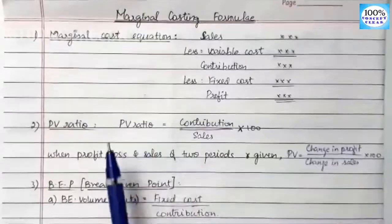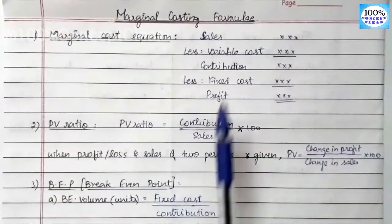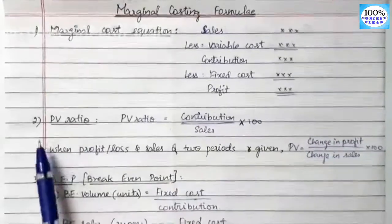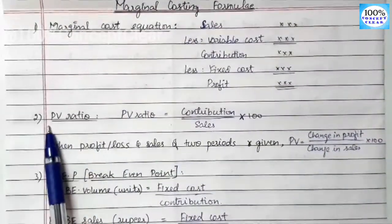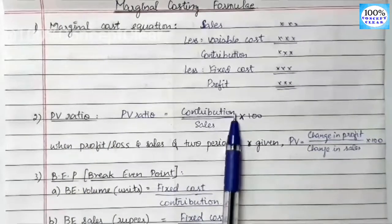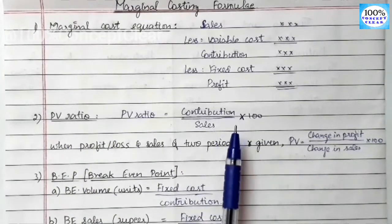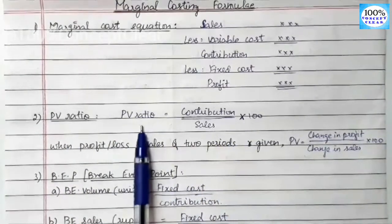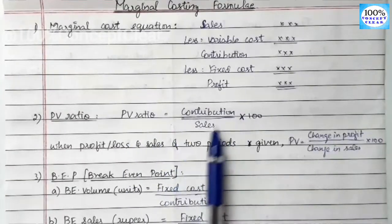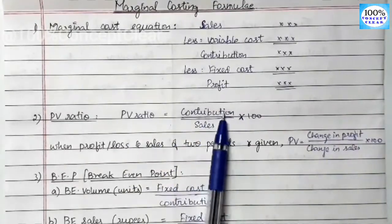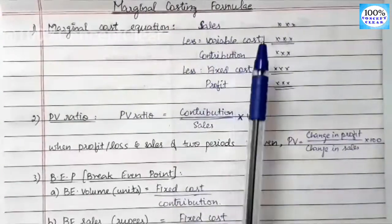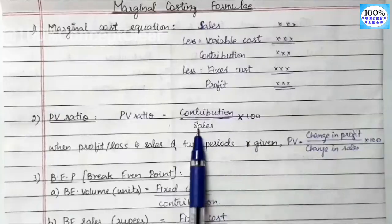In Marginal Costing, there are many formulas. Next, we look at PV ratio — that is the Profit Volume ratio. PV ratio is the most important relationship between contribution and sales. PV ratio equals Contribution divided by Sales.